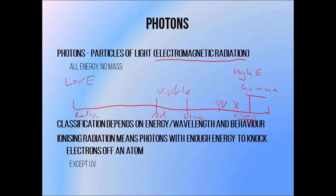Photons are little particles of electromagnetic radiation. They're basically all energy, have no mass, and move at the speed of light. The classification of photons — so whether they're radio waves, visible light, or high energy photons like X-rays and gamma rays — depends not just on their energy but also upon their behaviour. Radio waves pass through things, visible light bounces off things, and high energy photons pass through things but also cause damage on the way through.